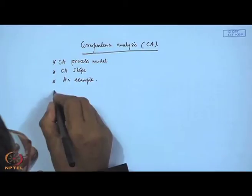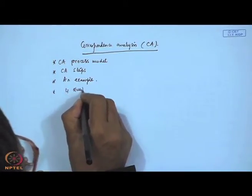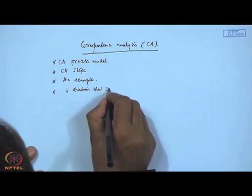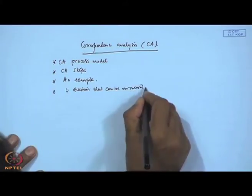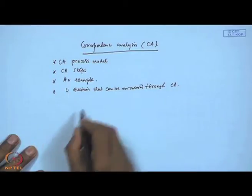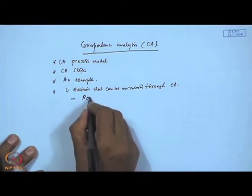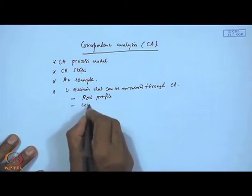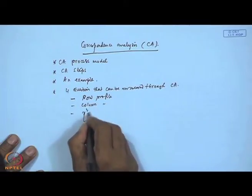We discussed about four questions that can be answered through CA. We have defined row profile, column profile, and chi-square distance.